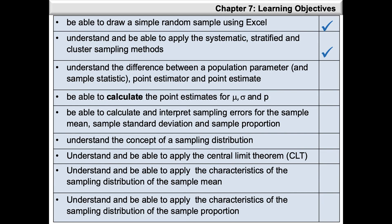In this video, we're going to take a look at the difference between a population parameter and sample statistic, point estimator and point estimate, how to calculate the point estimates for the population mean mu, population standard deviation sigma and population proportion p, and how to calculate and interpret sampling errors for the sample mean, sample standard deviation and sample proportion.